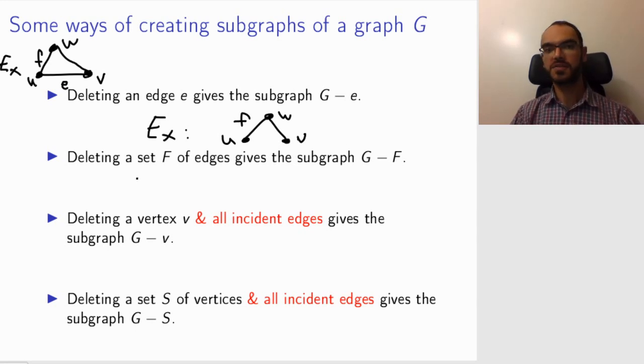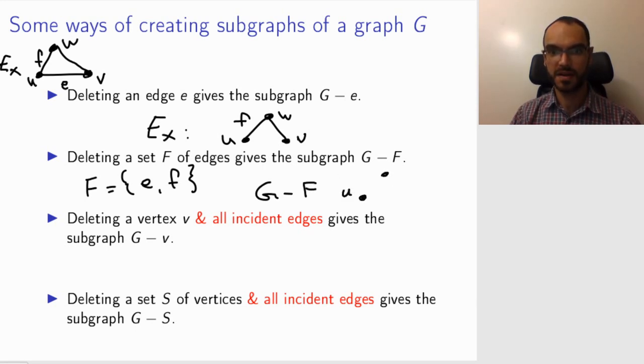So I can also delete a set of edges. So if F is the set consisting of both the edge E and the edge F, then the remaining graph from my example will be this guy, where both edges now have vanished.